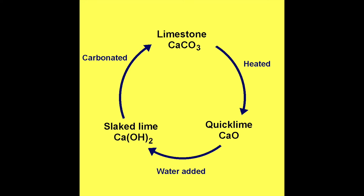Now you've got to know the limestone cycle. Limestone at the top is also known as calcium carbonate. If you heat it — which is thermal decomposition — it creates calcium oxide, also known as quicklime. Carbon dioxide is given off in this process.